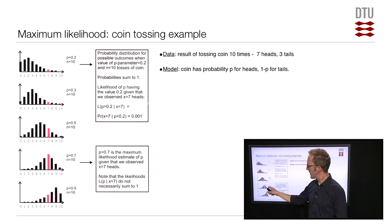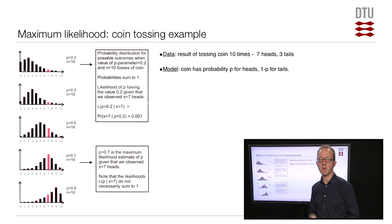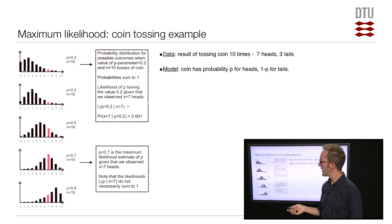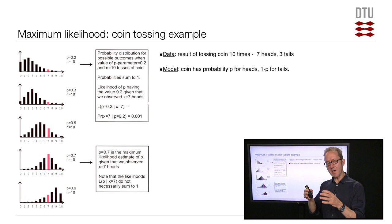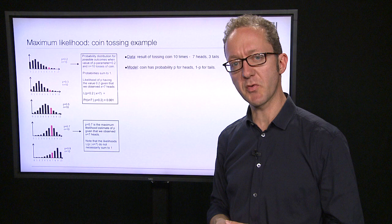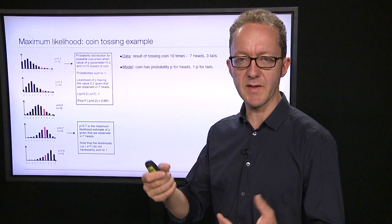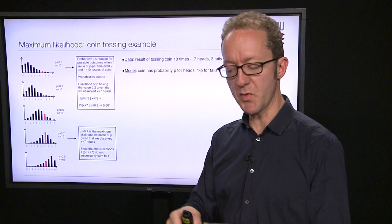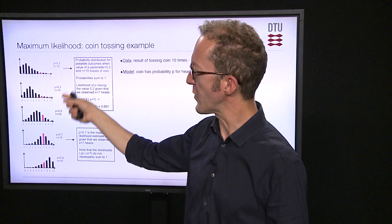Notice that we don't need to compute the entire distribution — we're just interested in the probability of the data we actually saw, in this case 7 heads. This is the main idea in maximum likelihood: we have data and a hypothesis about the system, the hypothesis allows us to compute the probability of any possible outcome including the one observed, and the goal is — numerically or analytically — to find the parameter values that maximize the likelihood. Often this is done numerically, where a computer randomly changes parameter values until it finds a maximum.